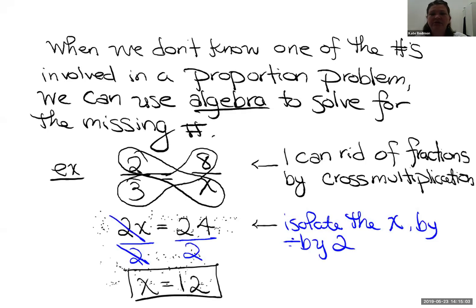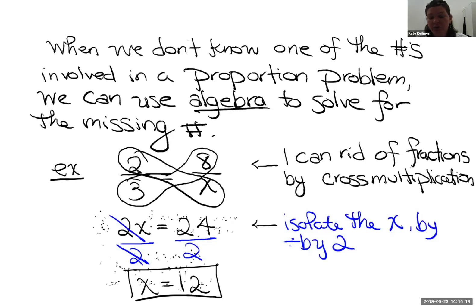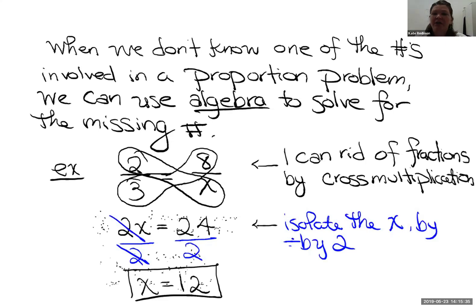A lot of students say their high school math teacher taught them a shortcut — just multiply and divide without writing down work. I always scold those students, because that only works for simpler problems. We're going to see complex problems on the GED where a shortcut won't work. So you'd better be able to handle it algebraically: first, cross products are equivalent, so cross multiply; then let the algebra lead you to get the letter alone.